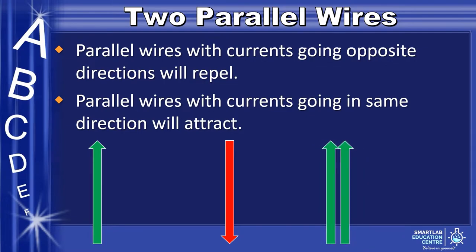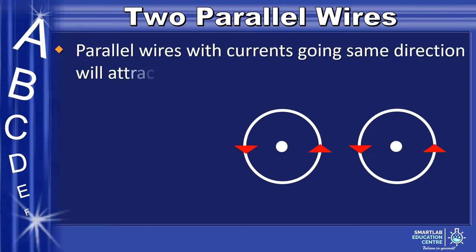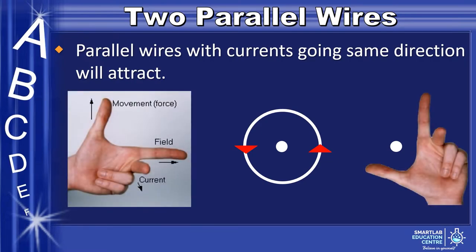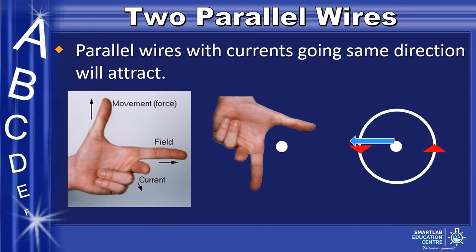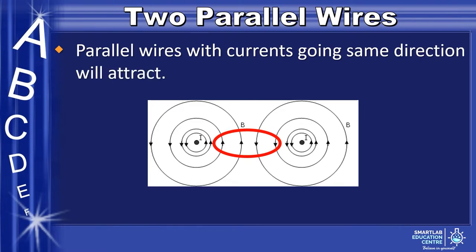But why? Let us observe the scenario where the currents are in the same direction. Let us focus on the wire on the right. According to Fleming's left-hand rule, the current is going out of the paper and the magnetic field points upwards, leading to the right wire being pushed towards the left. This can also be said for the left wire: with the current going out of the paper and the magnetic field going down, the wire moves to the right. As we can see, the wires are attracted to each other. As the wires get closer, the directions of the magnetic fields from both wires cancel each other in the middle, forming a neutral point.